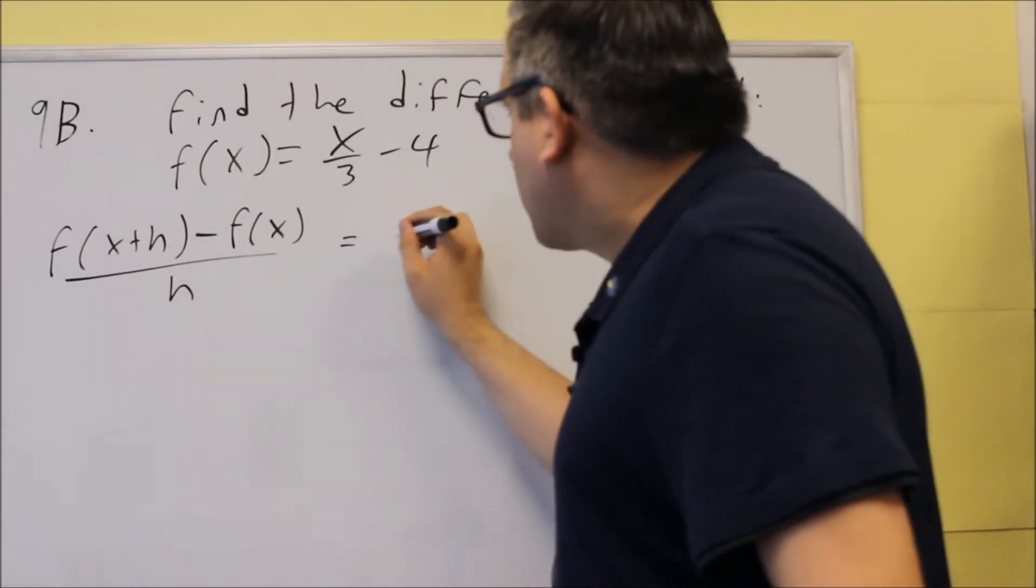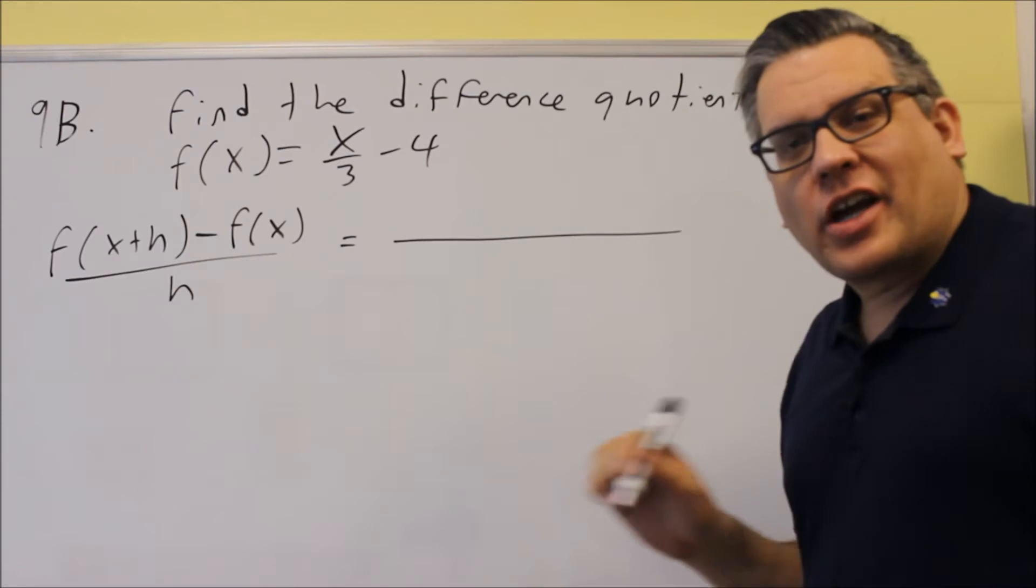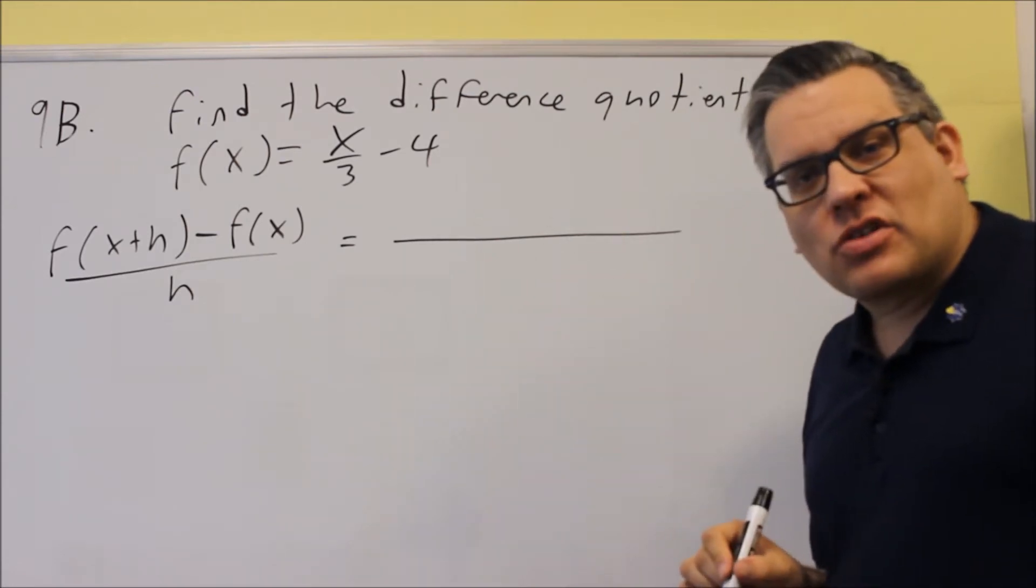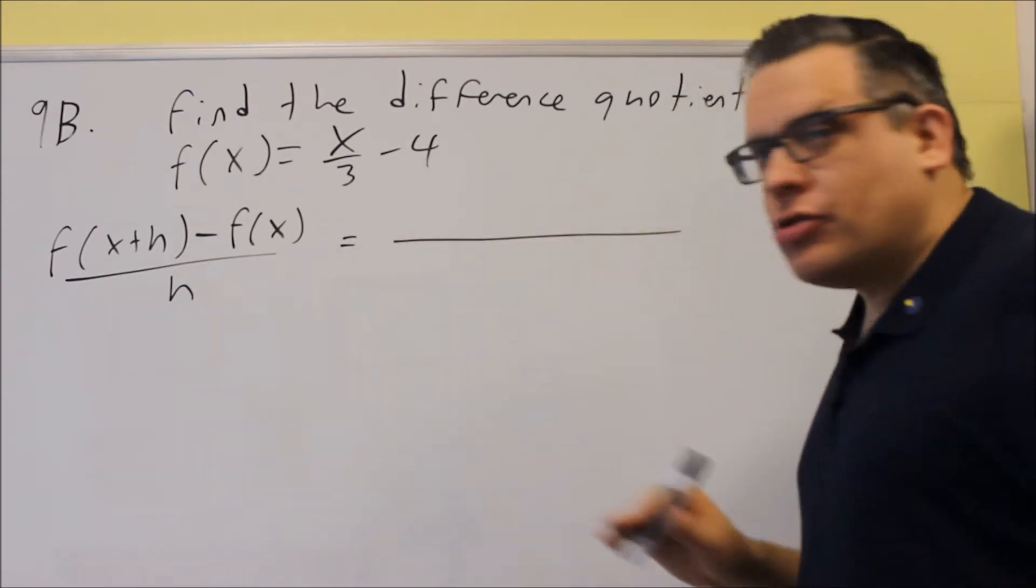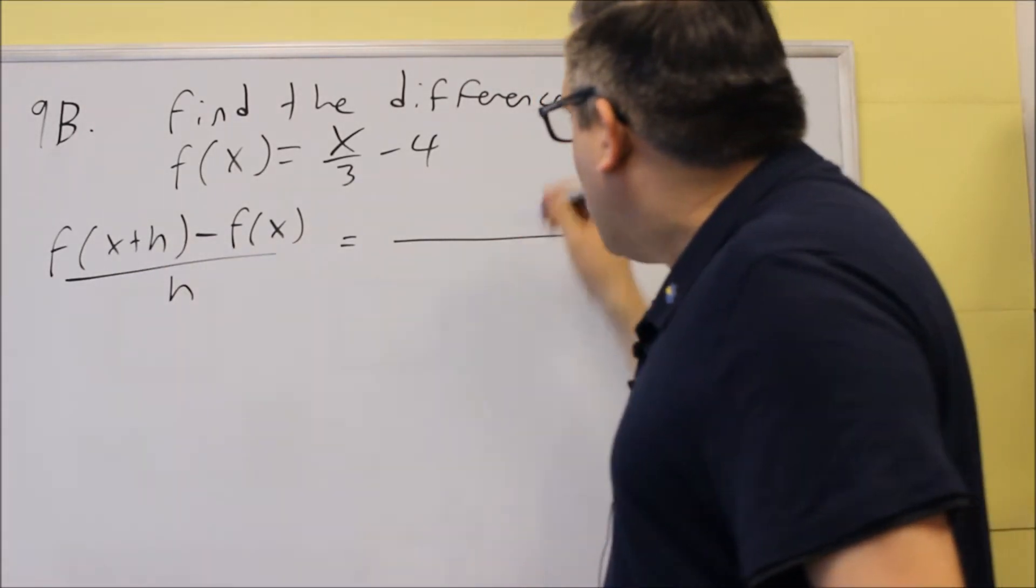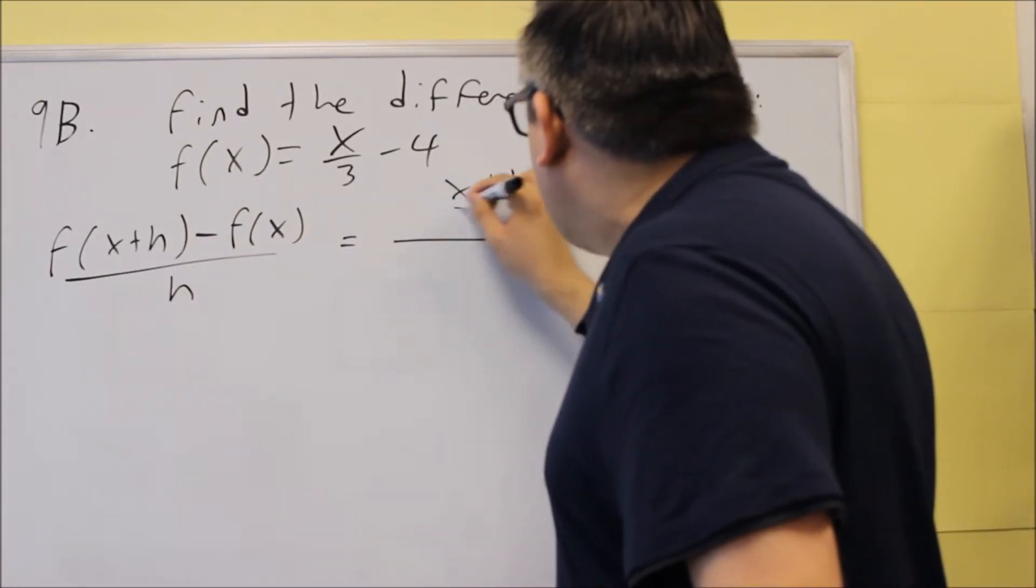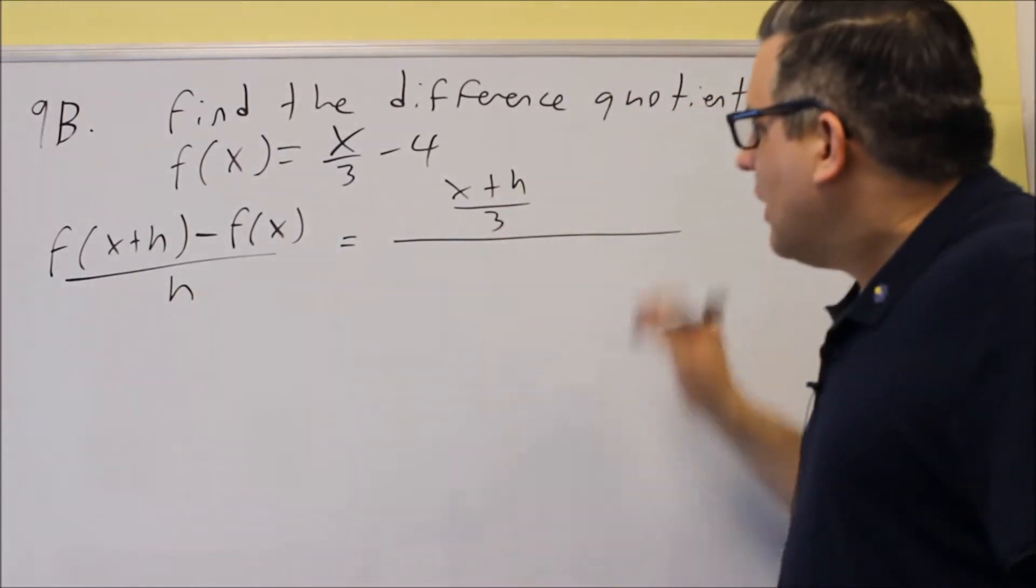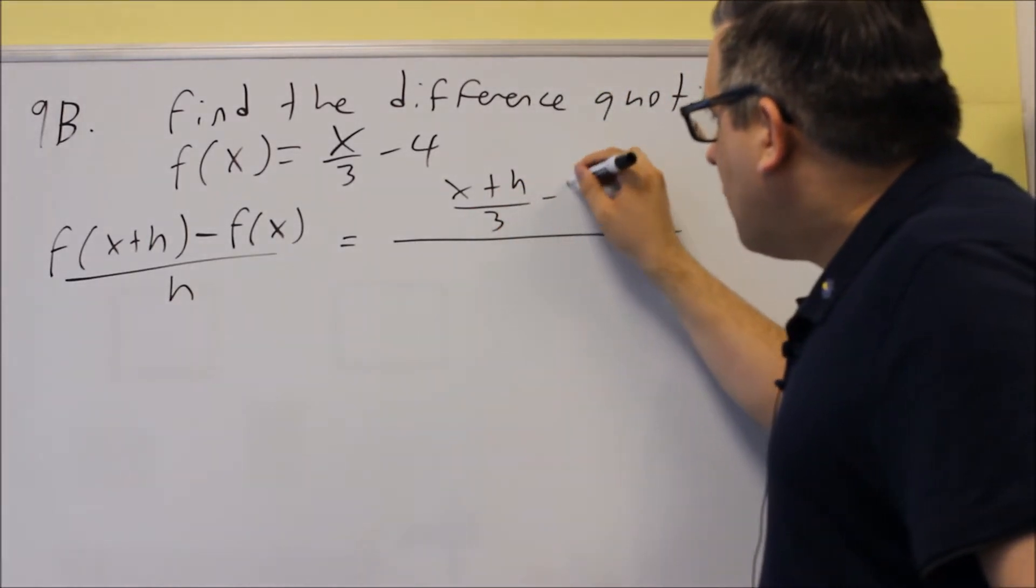So, this one, I'm just going to go right into the formula. For the previous one, I kind of did the f of x plus h off to the side, but if you wanted to put it all and do it in one step, you can do that as well. So, for instance, f of x plus h, that would be x plus h divided by 3. It would be then minus 4.